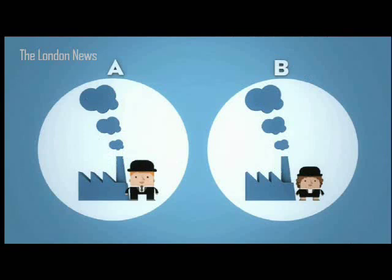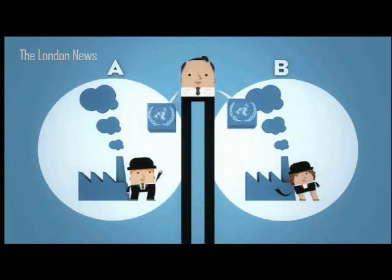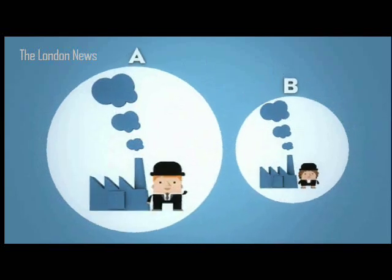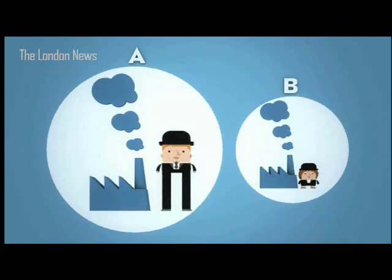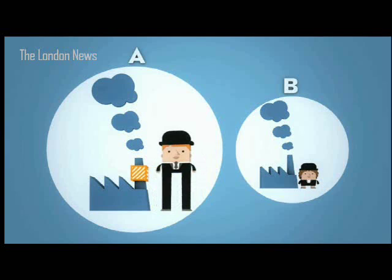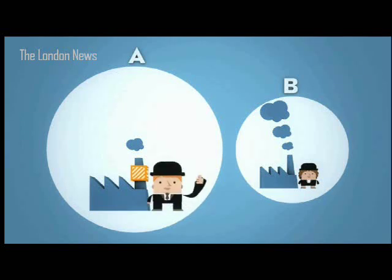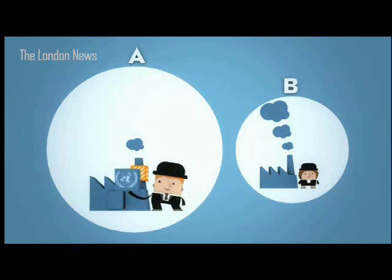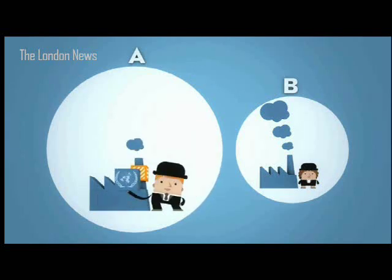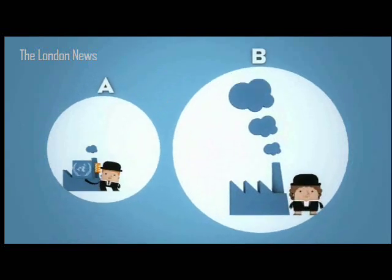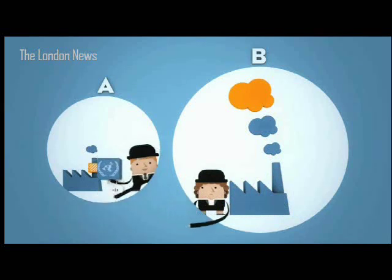Let's look at an example. Factory A and B have both been allocated carbon units by their authorities. Factory A decides to reduce its emissions by implementing climate-friendly measures. Their reduction efforts are in fact so successful that they have carbon units to spare. These can then be sold. Factory B, on the other hand, is unable to reduce its emissions and has to buy carbon units from Factory A, for instance.